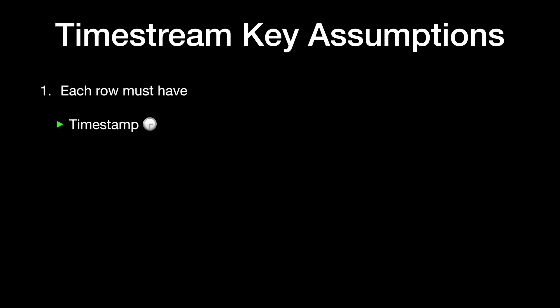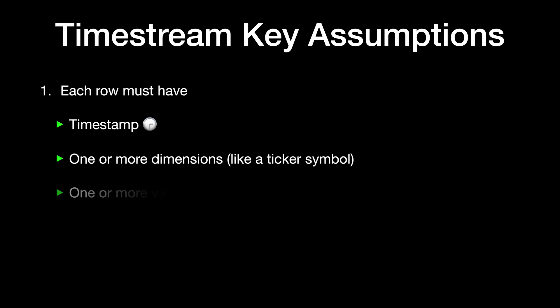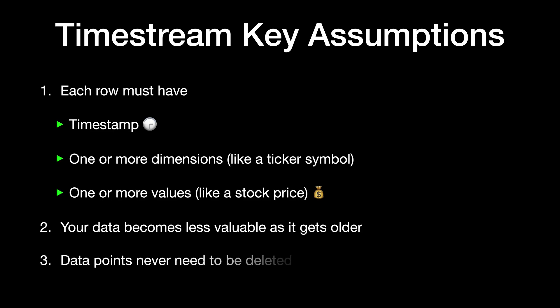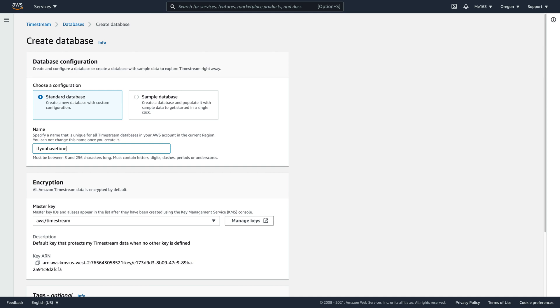That's where Timestream comes in. It relies on some key assumptions about your data. First, that each row must have a timestamp, one or more dimensions, like a ticker symbol for example, and one or more values, like a stock price. Second, it assumes that your data tends to become less valuable as it gets older. Finally, and possibly the biggest assumption, it assumes that you never need to delete any data points. In exchange for working within these constraints, Timestream offers low cost, automatic scaling, and extremely easy setup.